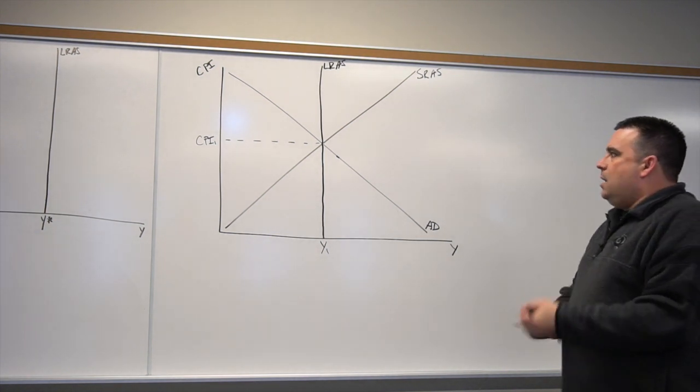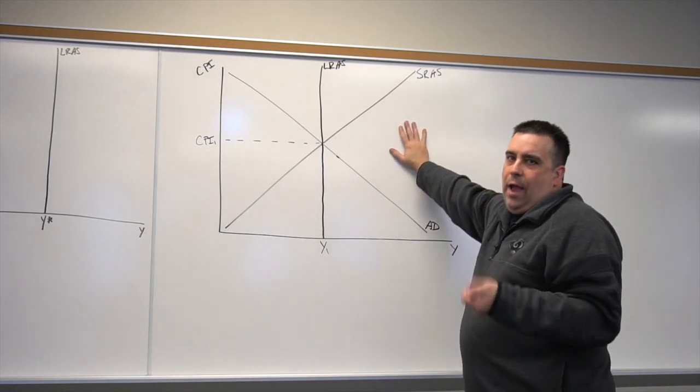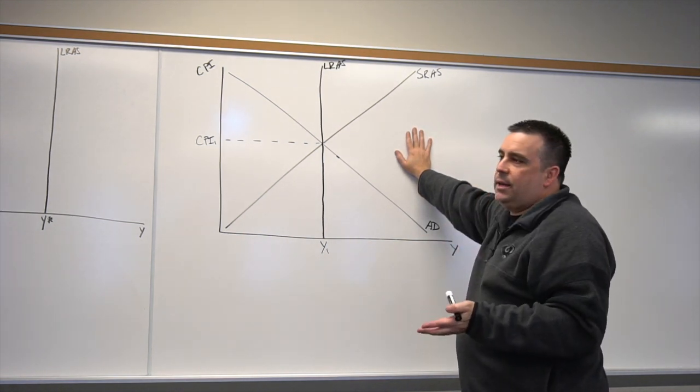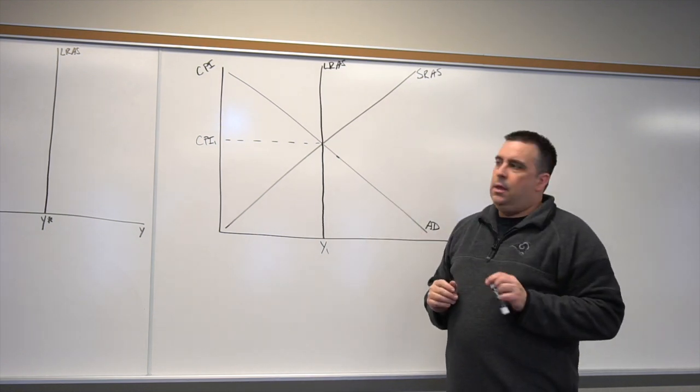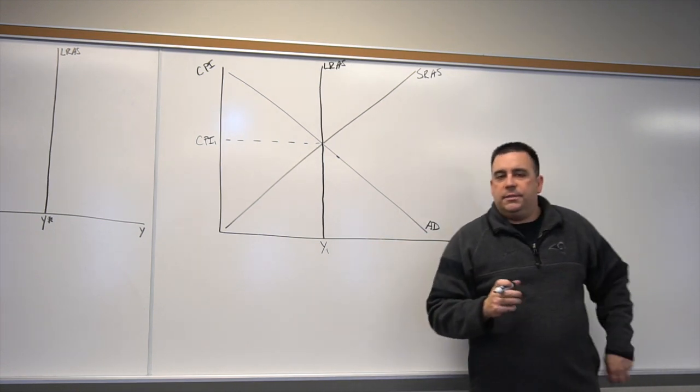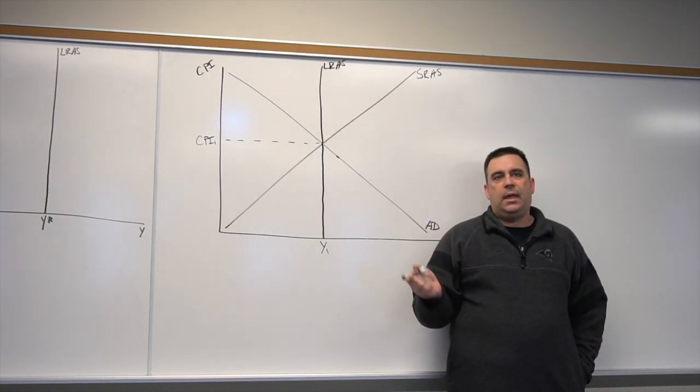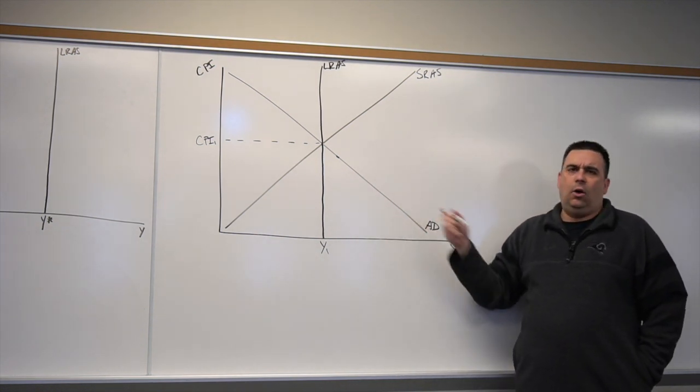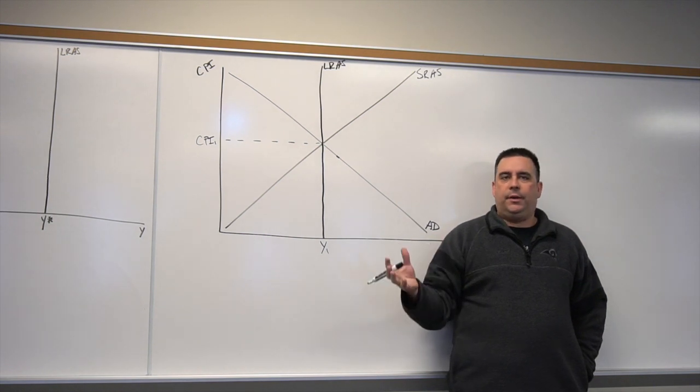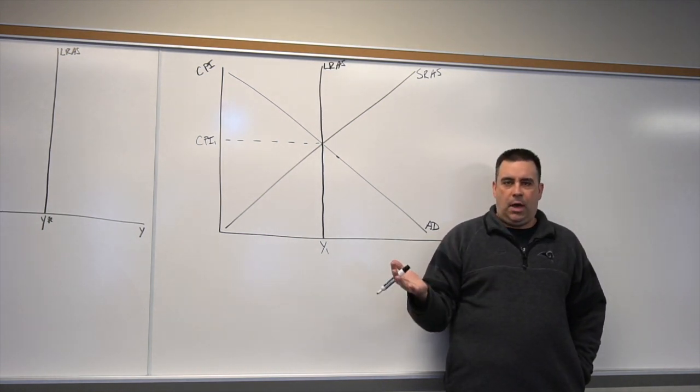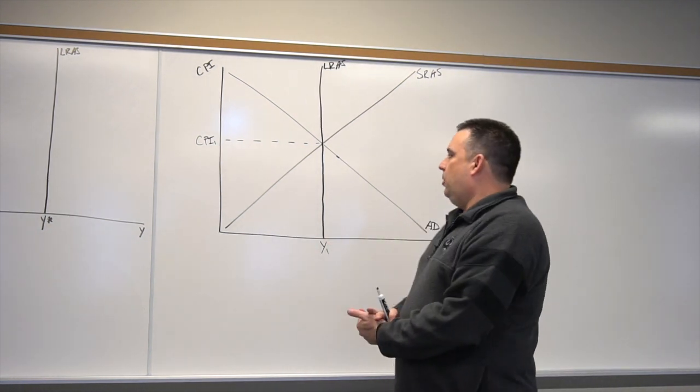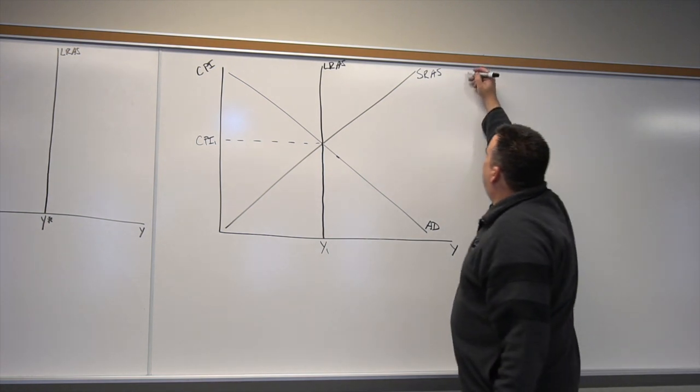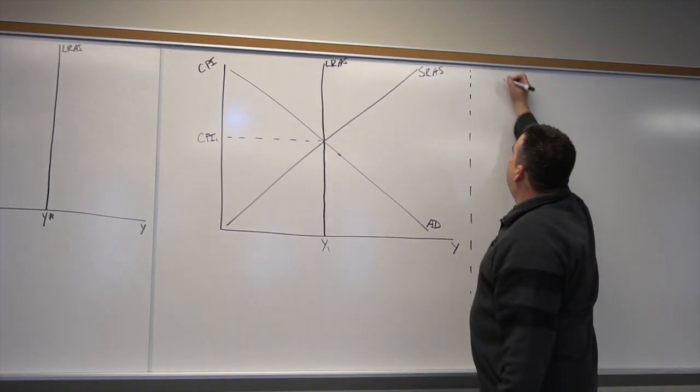We have now right here our starter graph for the aggregate supply and demand model. Anytime you see a question that says 'show using aggregate supply and demand analysis,' this is how our model starts. One of the things we like about this model is it's capable of showing both short run and long run changes at the same time. It's got multiple curves, it's got long and short run. We can actually show both economic growth on this model and business cycle activity on this model. We usually try to not show both at the same time, but we could. This model is capable of capturing multiple changes at once.